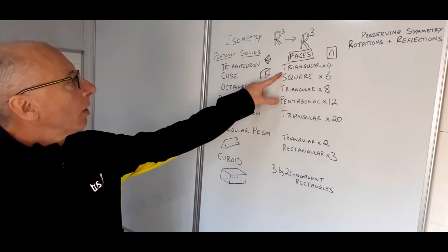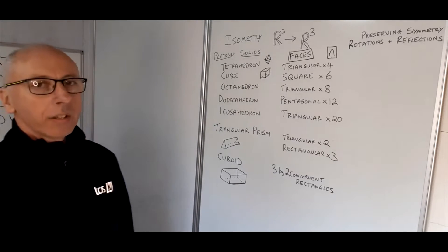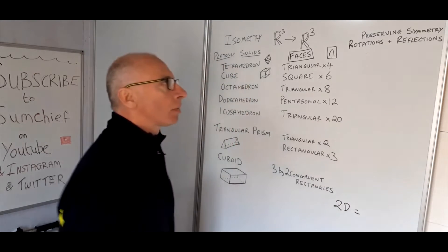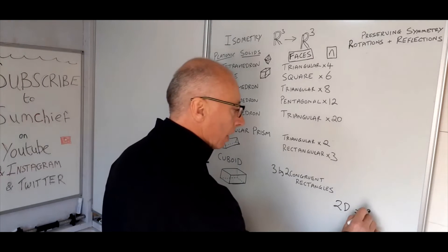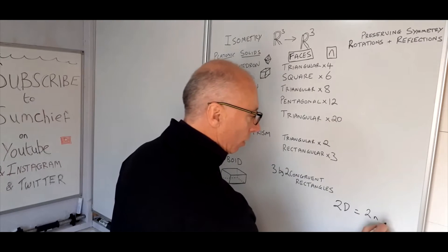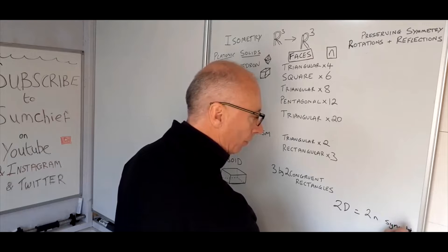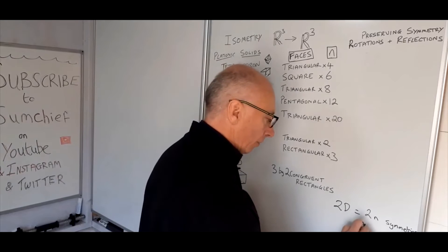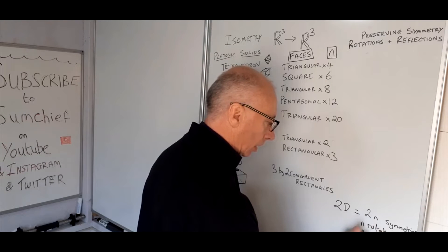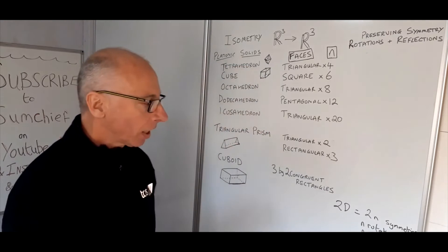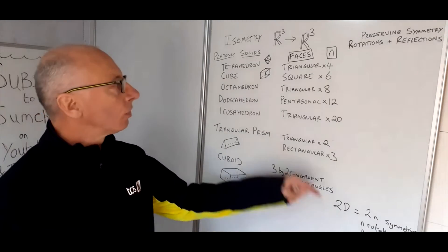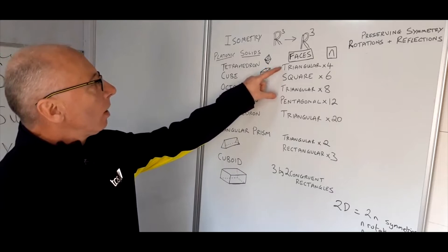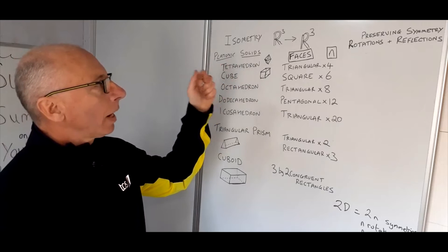For a two-dimensional shape, the symmetries are made up of 2n total — that's n rotations and n reflections. You can check the link in the description for the two-dimensional version of these symmetries. For a symmetry to work properly, a rotation or reflection of the shape must return it back to how it was, so it looks like nothing has changed.